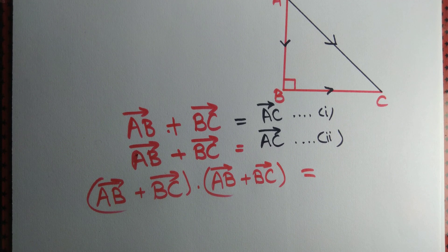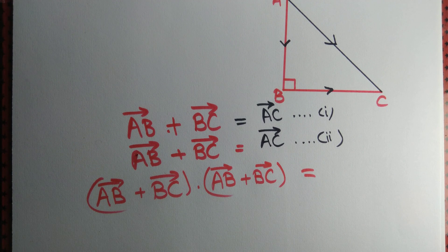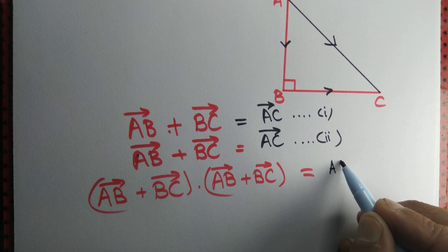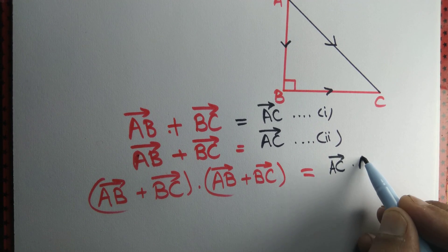Equal to, we take dot product on the left hand side. So let's take dot product on the right hand side as well. AC dot AC.